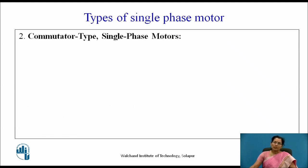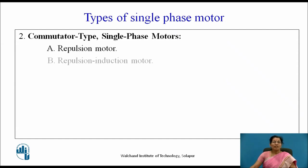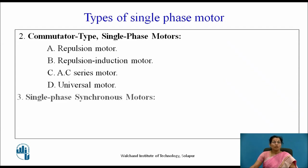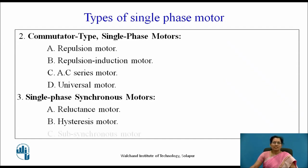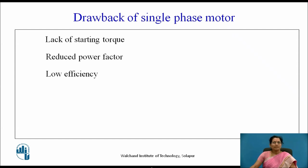The commutator type single-phase motors include: repulsion motor, repulsion induction motor, AC series motor, and universal motor. Then single-phase synchronous motor, which rotates with synchronous speed — that is reluctance motor, hysteresis motor, and sub-synchronous motors. There are some drawbacks of single-phase induction motors.